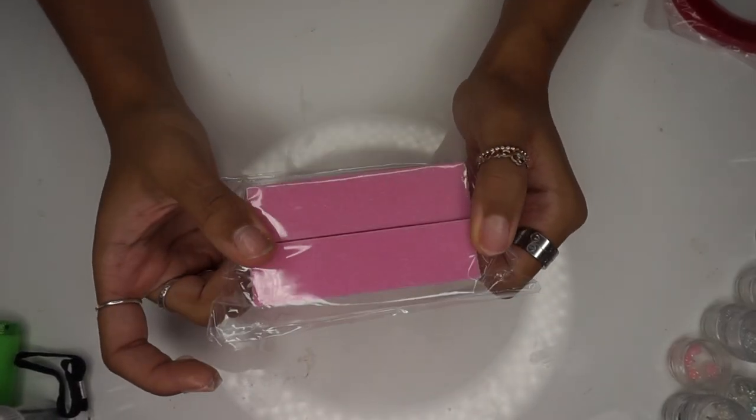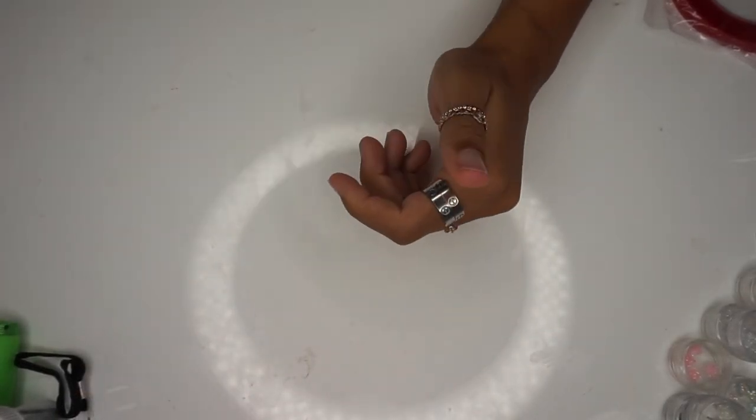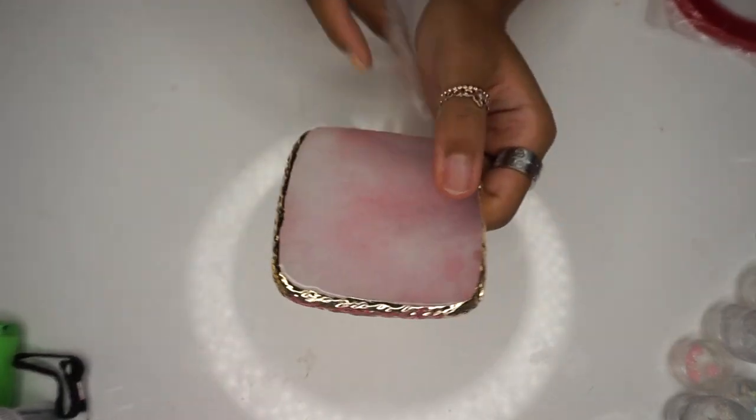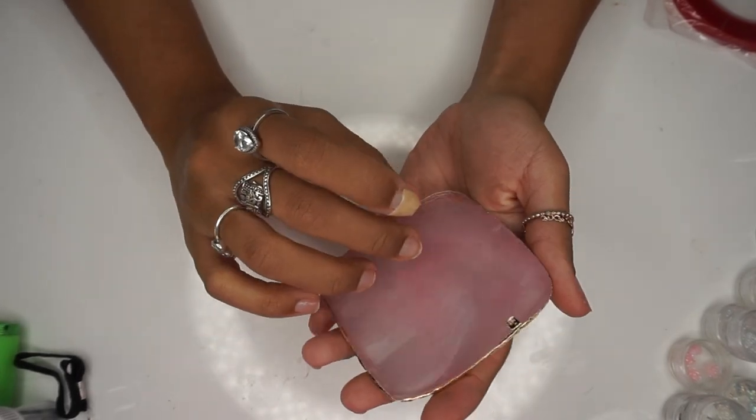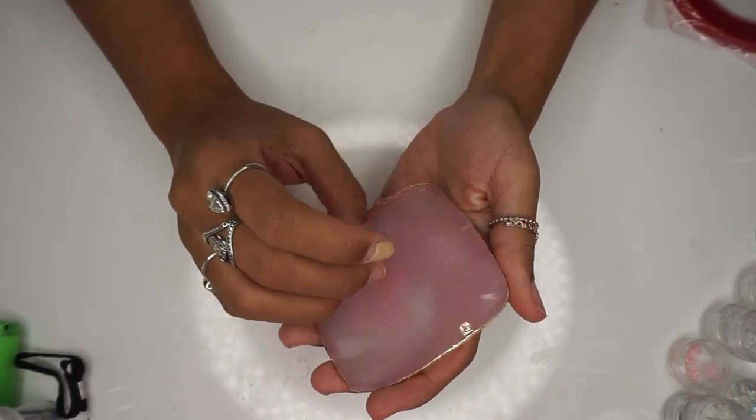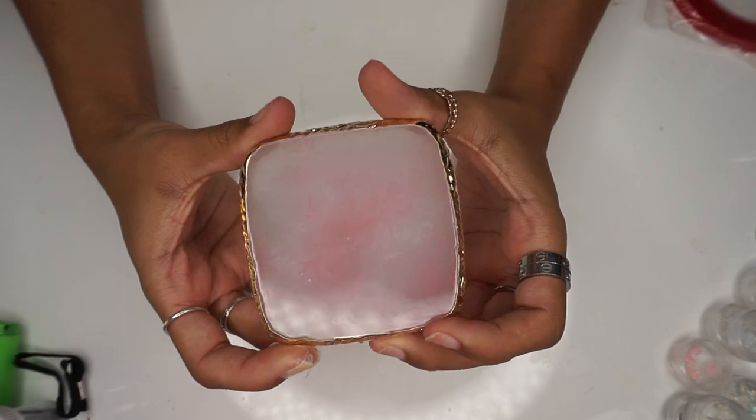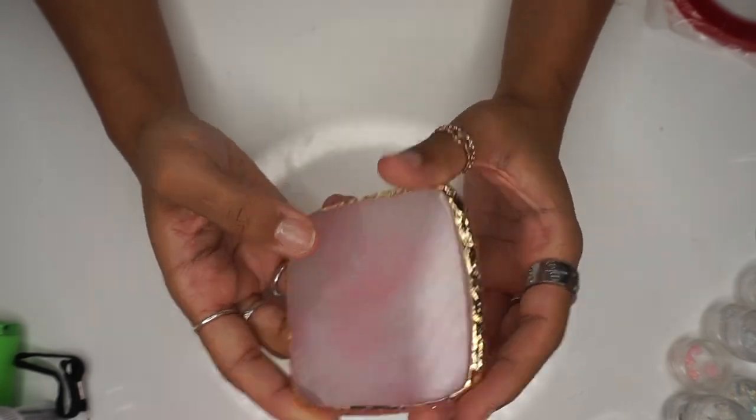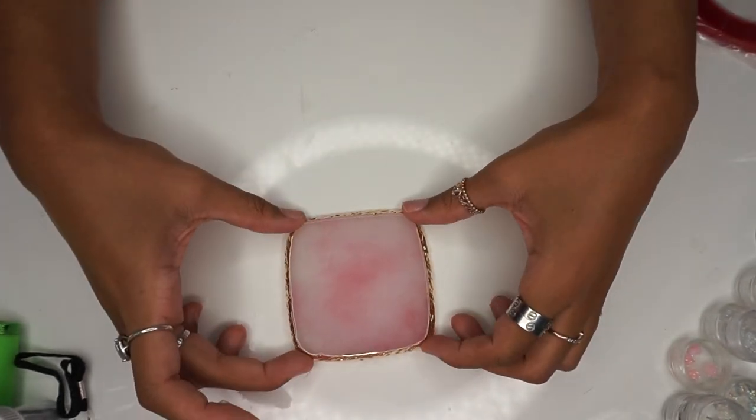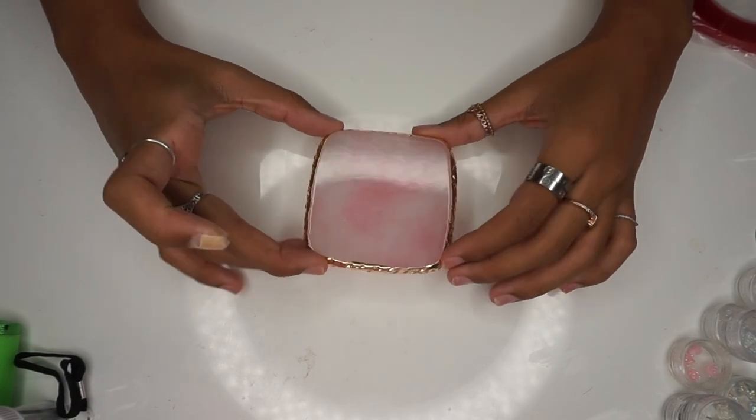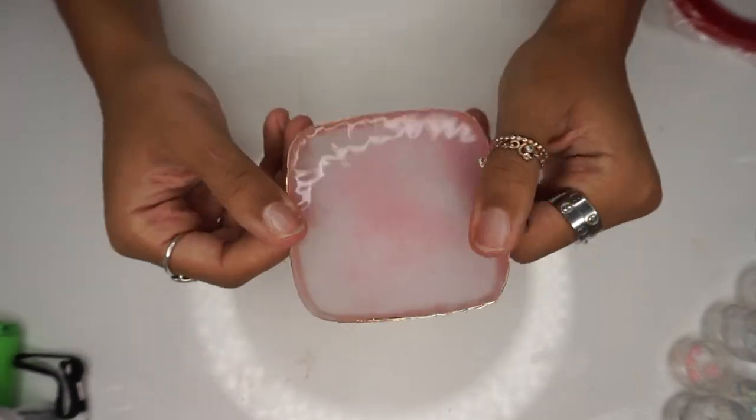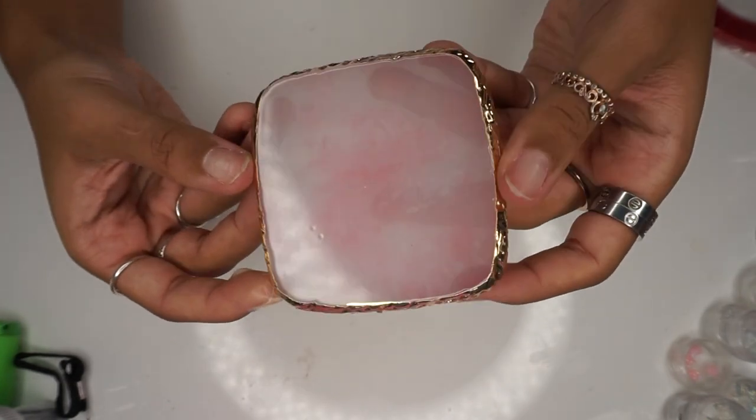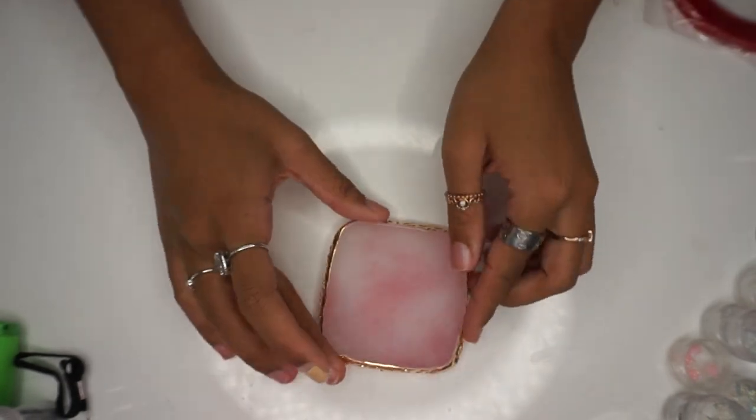These are just some buffing blocks, they were like a dollar. Next, this one was such a good investment. This is the one piece resin square nail art palette, four fifty. This was the most expensive thing but it's definitely worth it if you do a lot of mixing, like in that one video where I taught you guys how to make your own poly gel colors.